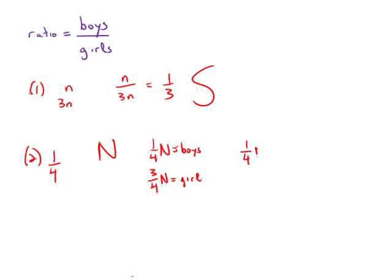Again, if we take the ratio, one-quarter N over three-quarters N, the N's cancel. And one-quarter times the reciprocal, four-thirds, the fours cancel. And again, we get a value of one-third. So again, this information by itself allows us to calculate the answer to the question. So this statement by itself is sufficient.